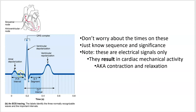This is roughly the amount of time — about 0.2 seconds — between the beginning of atrial contraction and the beginning of ventricular contraction. This is not atrial contraction itself, just the electrical signal that causes it, but if atrial depolarization starts here and ventricular depolarization starts here, that's about the gap between the two chambers contracting.